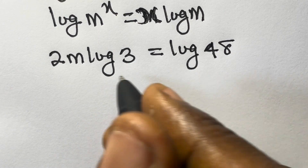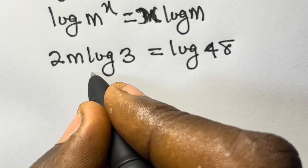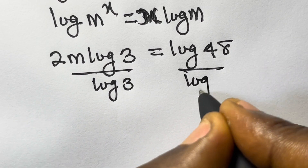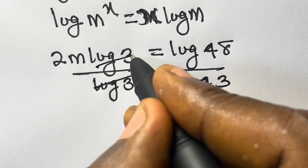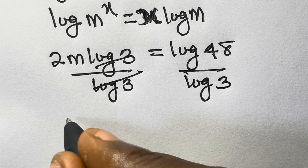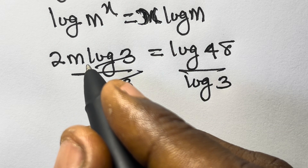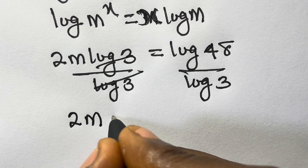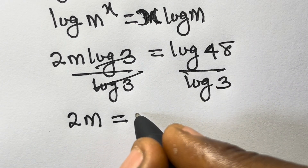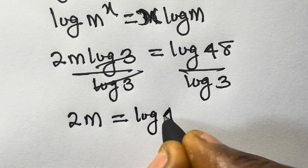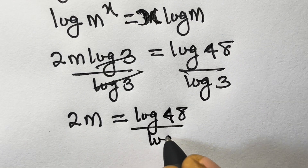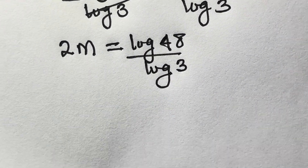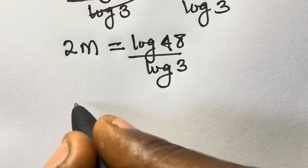From here, if we divide both sides by log 3, the log 3 terms cancel, and we have 2m equals log 48 divided by log 3.